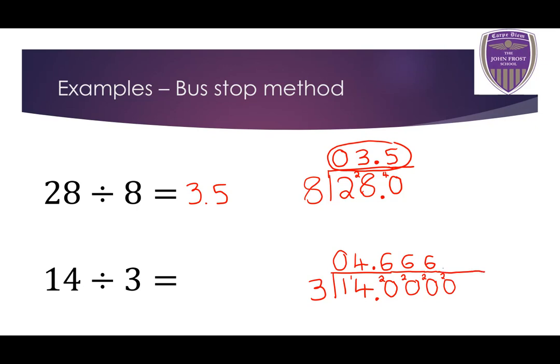Now, hang on a minute — this looks like it's going to repeat infinitely. So, if our decimal looks like it's going to repeat infinitely, this is called a recurring decimal. We're going to stop there. Once we've realized we've got a recurring decimal, we write this as 4.6, and we put a dot on top of the decimal. That recurs, to save us writing that number out infinitely.